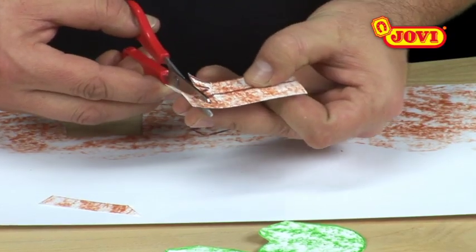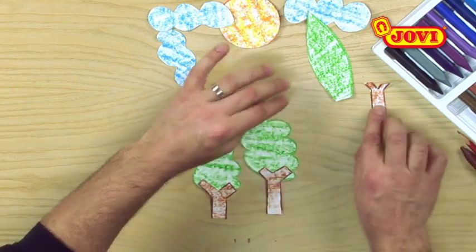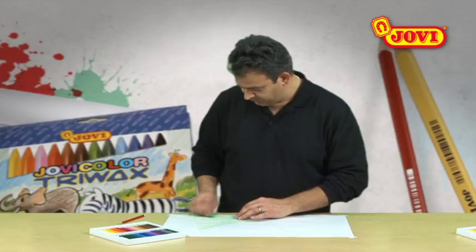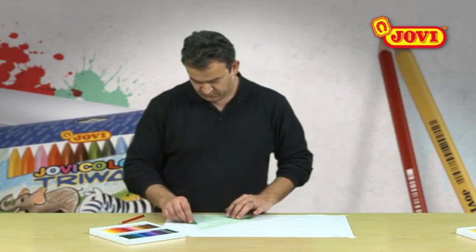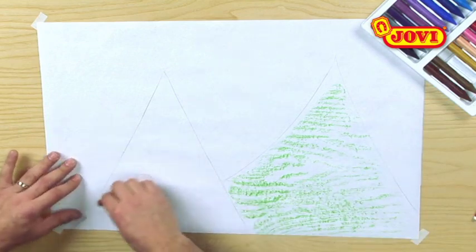To make tree tops and trunks stand out, we colour round the edges using green and dark brown wax crayons, respectively. Next, we use a pencil to draw the mountain landscape that will form the background for our poster.